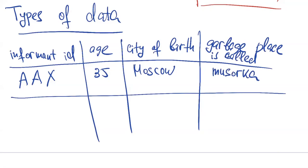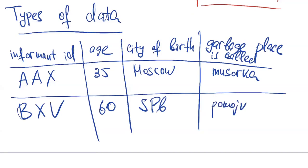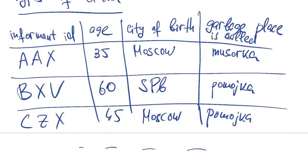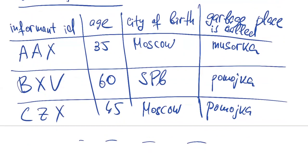We have another person, for example from St. Petersburg, and this person uses 'pomoyka'. A third person, age 45, again from Moscow, also uses 'pomoyka'. We probably have a large table — sometimes hundreds, sometimes thousands, sometimes millions of rows. This is a typical data frame, a typical table containing the data.